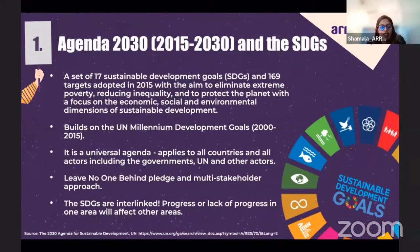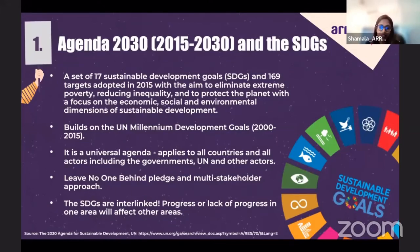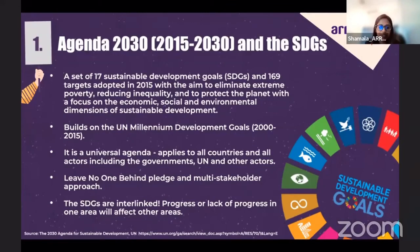Agenda 2030 is anchored by a multi-stakeholder approach, which is the core of the 2030 Agenda, and it requires commitment and dedication from all actors and societies, in addition to governments and the UN, in order to realize the goals and targets. The interventions also require expertise, technology, and financial resources from businesses, academia, civil society, and individuals. The 17 SDGs are connected and interlinked, meaning progress or lack of progress in one area will have an impact on the outcomes of other areas.